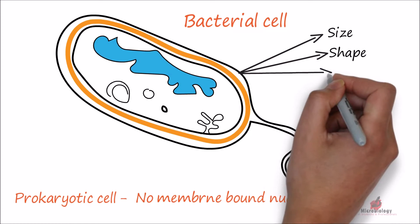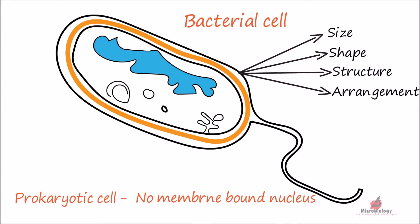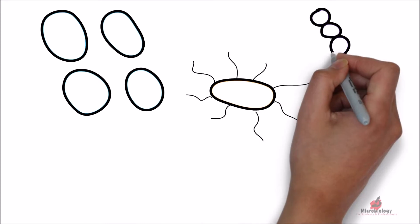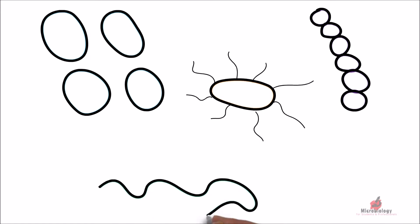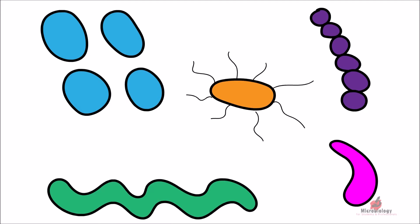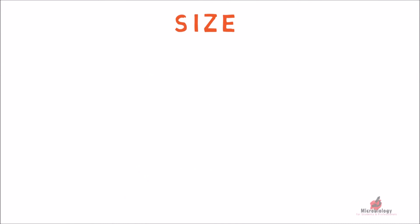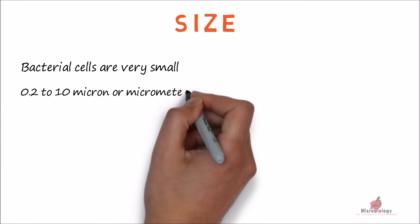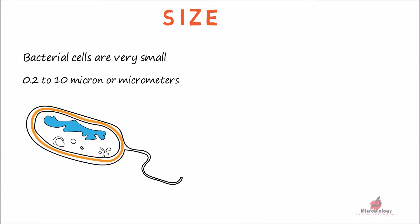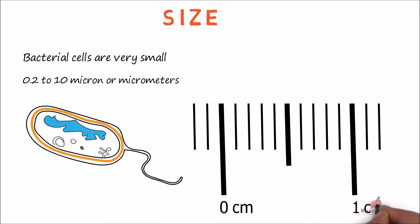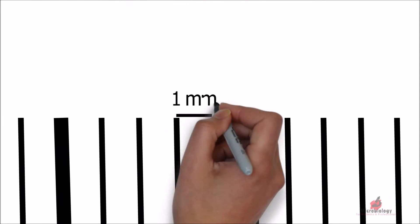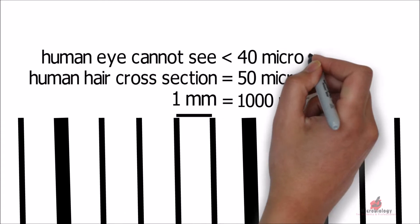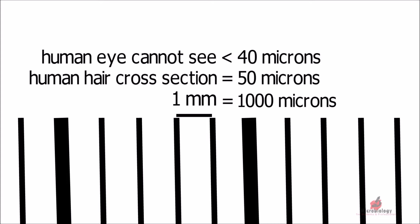The major characteristics of any bacterial cell mainly depend on the size, shape, structure, and arrangement of cells. Each species has its own characteristics. The cells may occur individually or in groups. Bacterial cells are very small. The size ranges from 0.2 to 10 microns or micrometers. For understanding, 1 micron is 1,000th of a millimeter. The average cross-section of a human hair is about 50 microns. The human eye cannot see anything smaller than 40 microns.